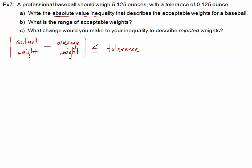So let's put this into our algebra. So we have our absolute value. The actual weight, well, we don't really know. That's our variable. I'll just use X. X, and then a minus sign. Our average weight is given to us in the problem. That's 5.125, and that's measured in ounces.